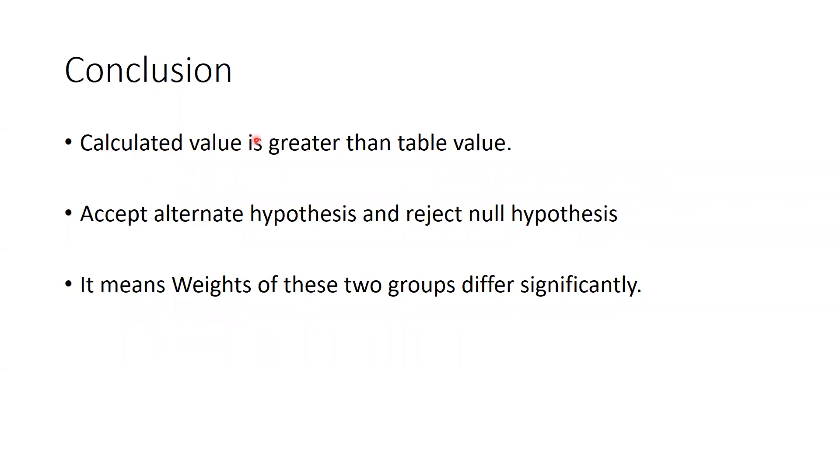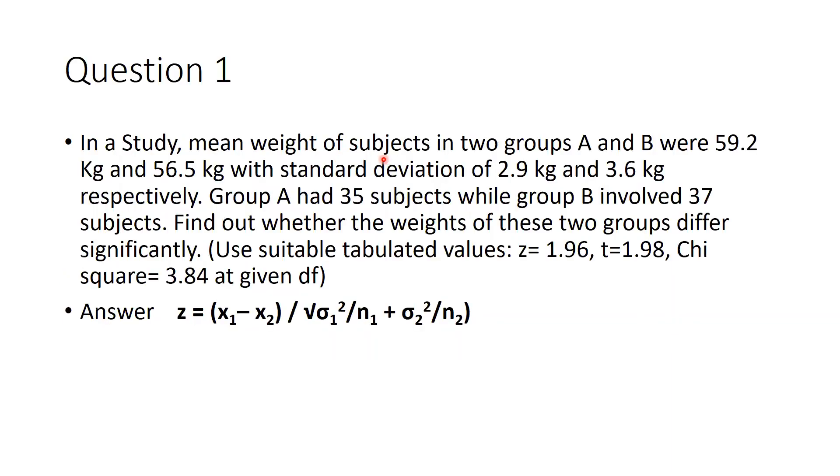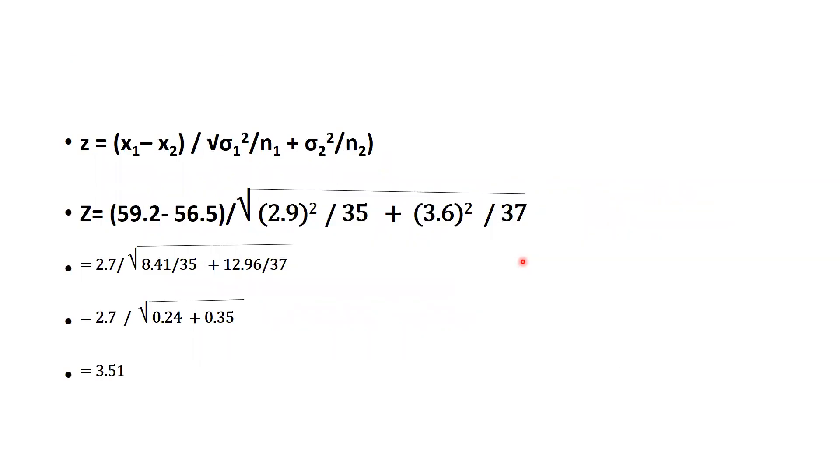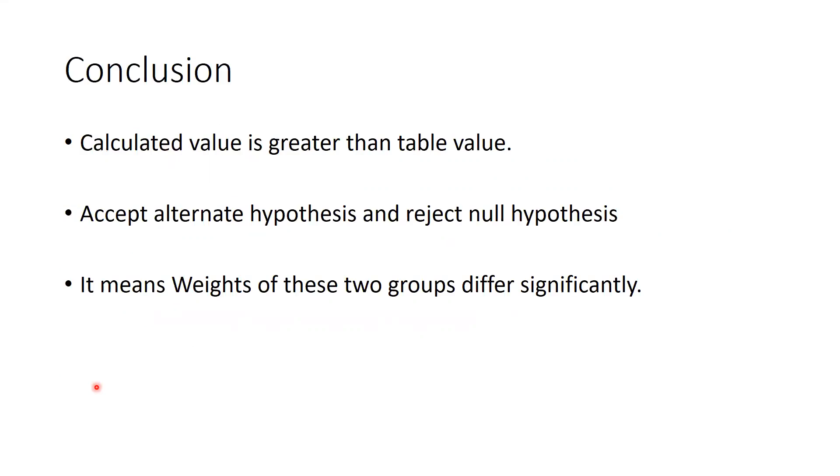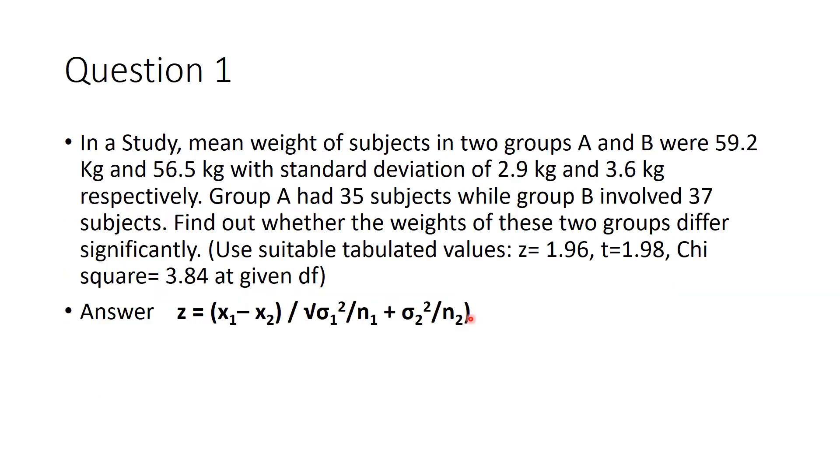Simply, calculated value is greater than table value because table value is 1.96 and calculated value is 3.51. So simply what we have to say: accept alternate hypothesis and reject null hypothesis. It means weights of these two groups differ significantly and that was our problem.